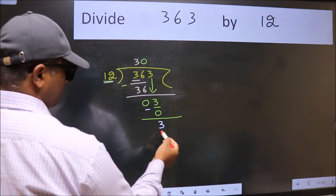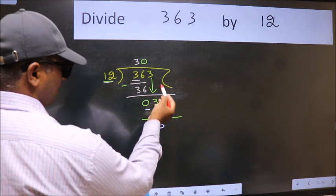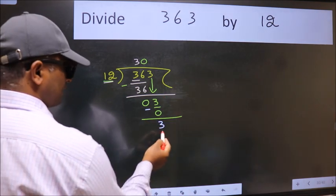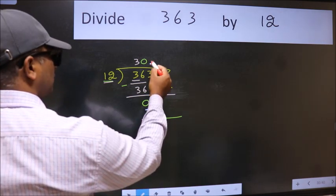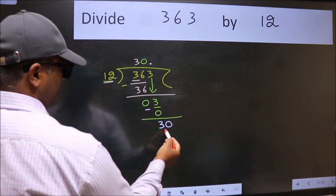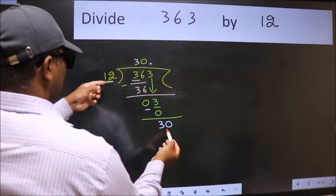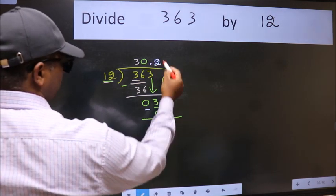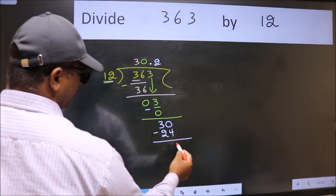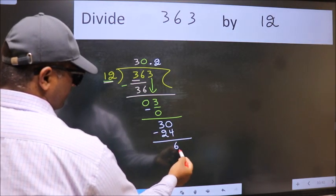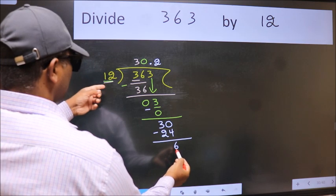Over here, we did not bring any number down and 3 is smaller than 12. So now we can put dot and take 0. So, 30. Our number close to 30 in 12 table is 12 times 2, 24. Now we subtract. We get 6.